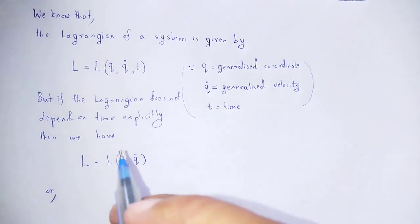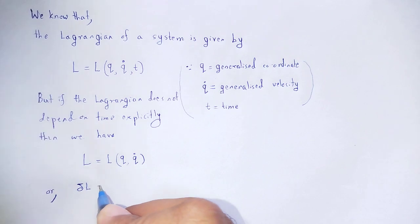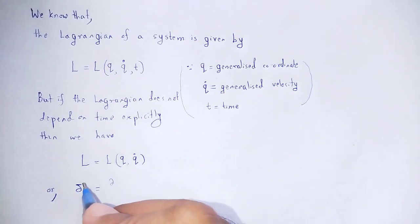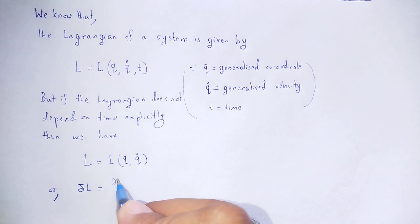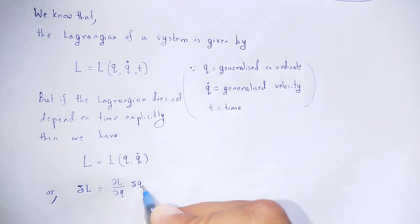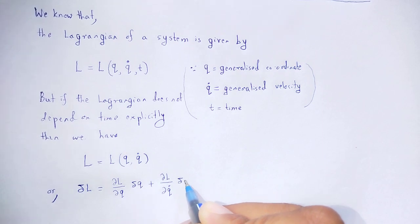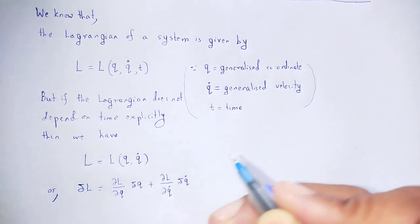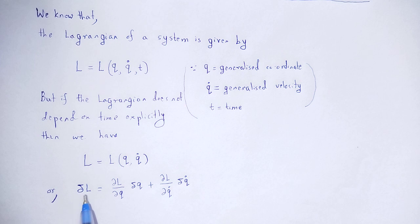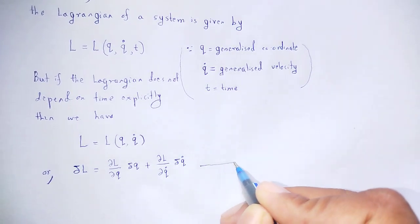Therefore, any variation in the Lagrangian, δL, is given by: δL = (∂L/∂q)δq + (∂L/∂q̇)δq̇. This is equation number one.